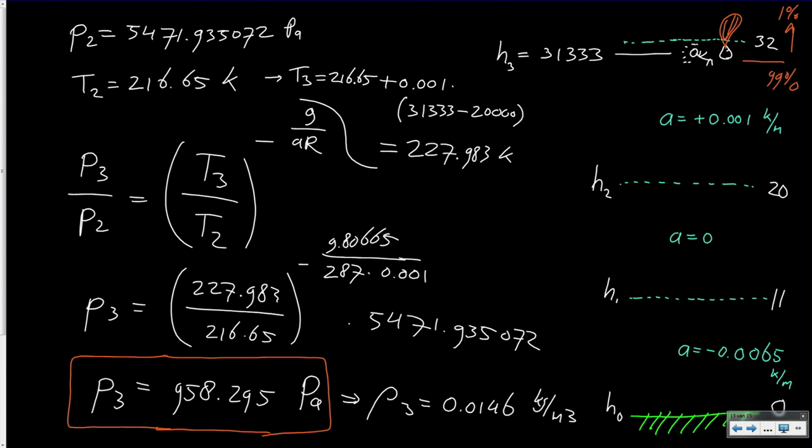So we looked at Joe Kittinger, but Baumgartner went even higher. For you, as an exercise, I leave it up to you to start at 20 km altitude, then go to 32 km, and then to the altitude of Baumgartner at over 38 km, and find out what the pressure and density were at those values. I wish you success with this exercise. Thank you very much.